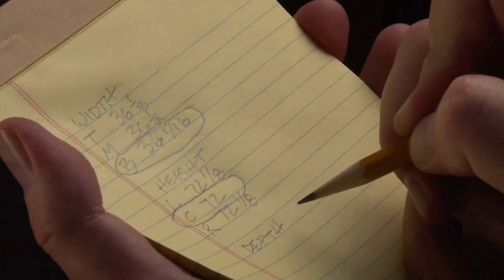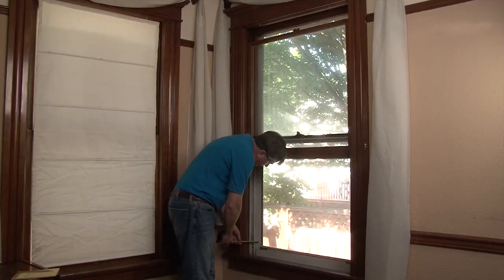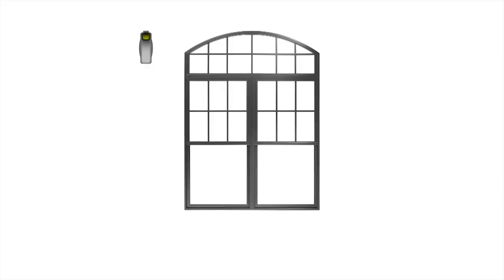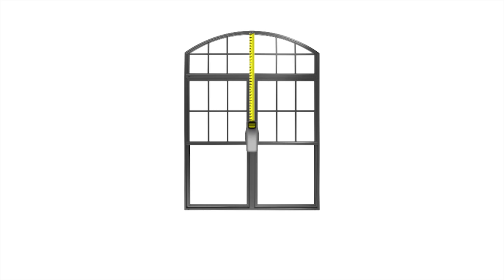Finally, measure the depth of the jams at the deepest section of your window. If you're measuring a non-rectangular window or one with an arch, find the center of the window, then measure from center to the face of the frame and add one half inch.